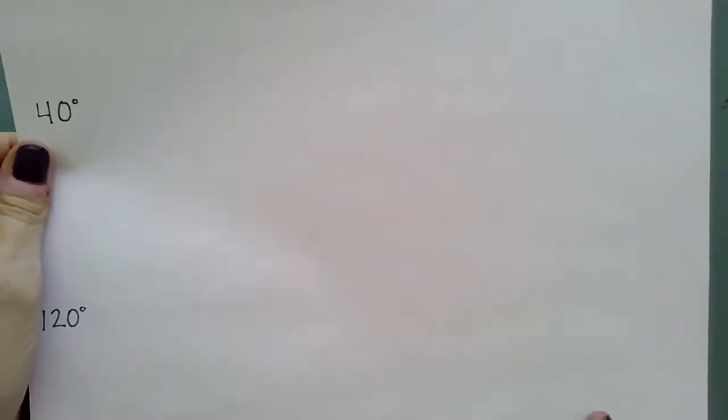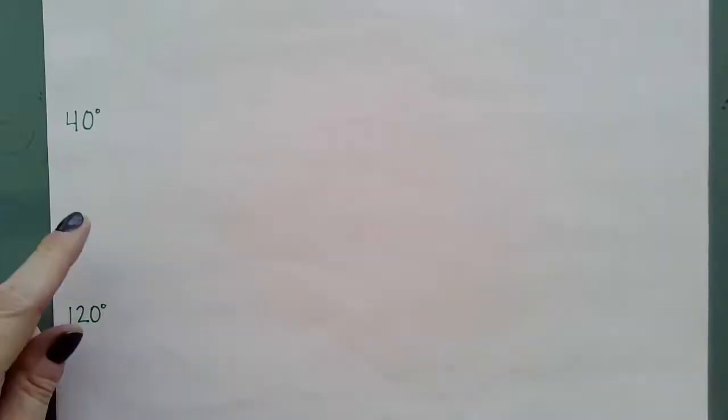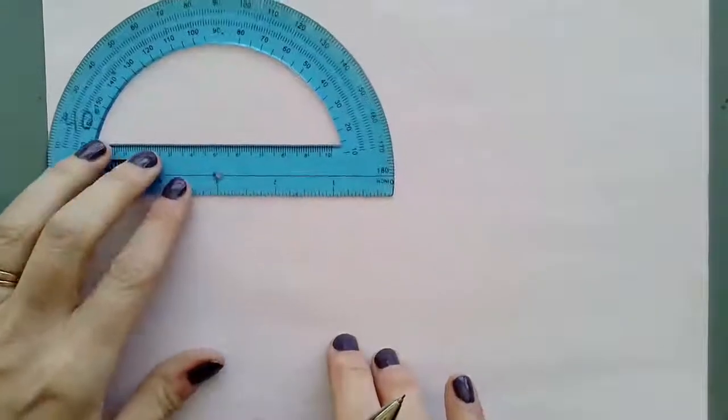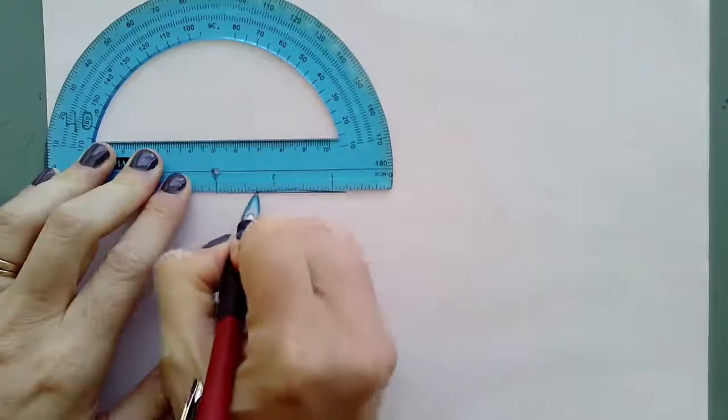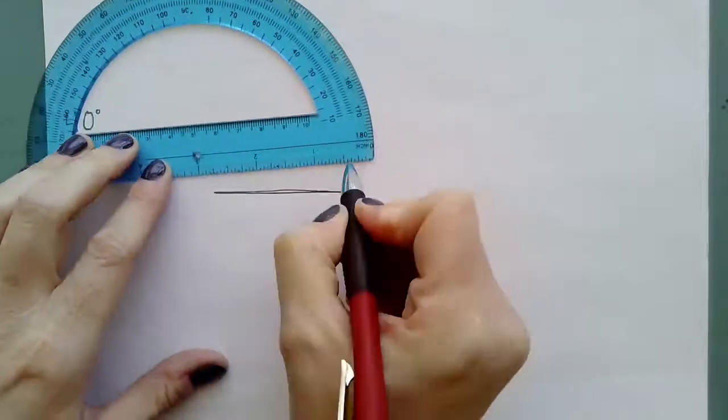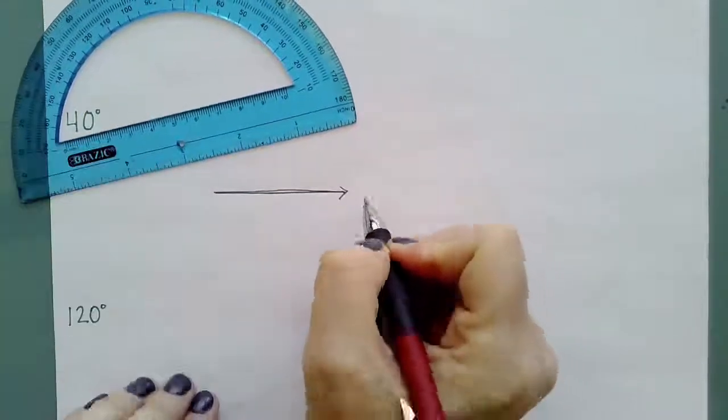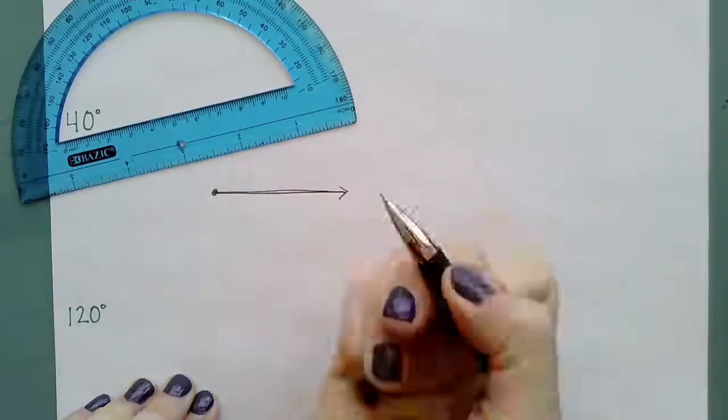So now we're going to draw some angles. So I'm looking at 40 degrees. So I know this is going to be an acute angle. It's going to be less than 90 degrees. So the first thing that I need to do is I need to draw a ray. I've got my ray here. And then I have my vertex.